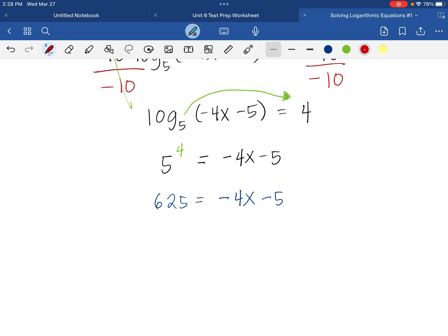Inverse of negative 5 is plus 5. We are left with negative 4x equals 630.